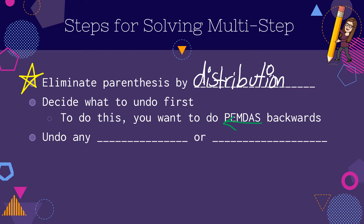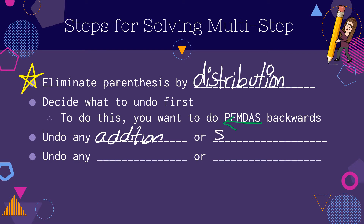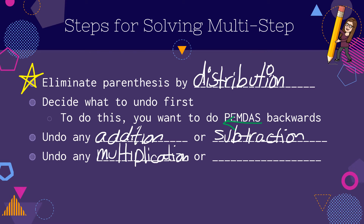So the first thing we're going to do — and I'm going to keep writing this over and over again — we're going to undo any addition or subtraction, and then we're going to undo any multiplication or division. These are the same steps. So we're just adding one step of distribution today.